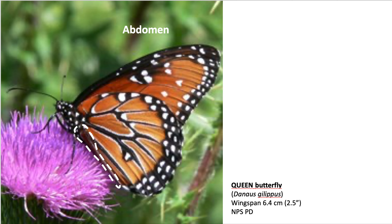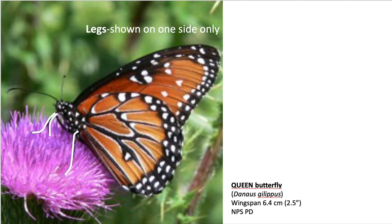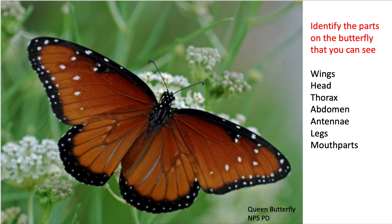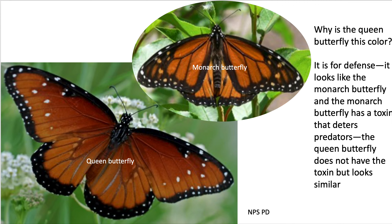Then the abdomen, the antenna, and the legs — three shown on one side in this diagram, so six legs total, making it an insect. Then the mouthparts at the front end of the head. You can review each of those parts on this butterfly, and again it's a queen butterfly, which is the lower left-hand picture there.